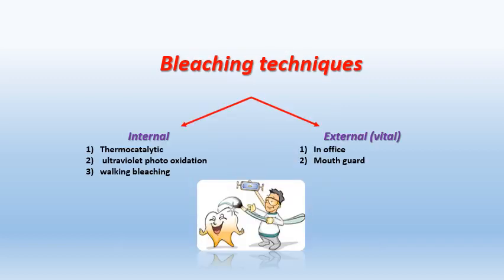Bleaching techniques are classified into either internal bleaching or external bleaching. In internal bleaching, the tooth is mainly non-vital, so the bleaching agent is applied inside the access cavity. In external bleaching, the bleaching agent is applied over the external surface of the tooth. Internal bleaching is further classified into thermocatalytic, ultraviolet photo-oxidation, or walking bleaching. External bleaching is further classified into in-office bleaching and mouth guard bleaching.